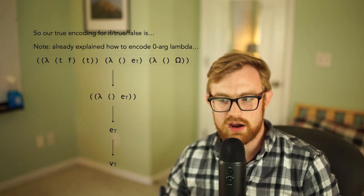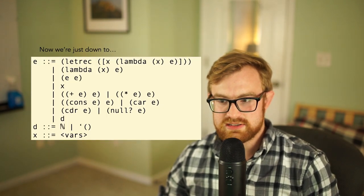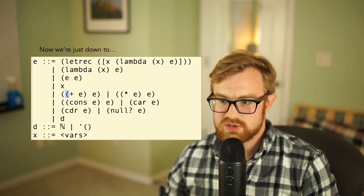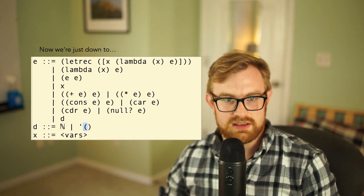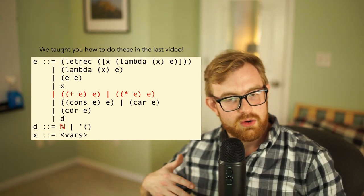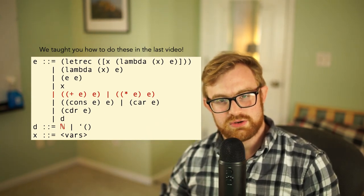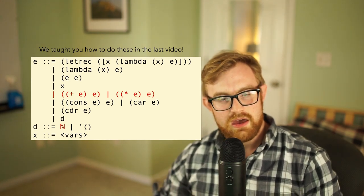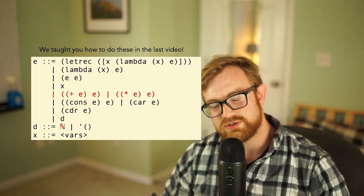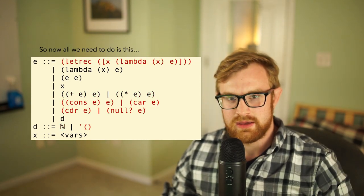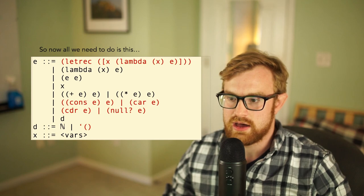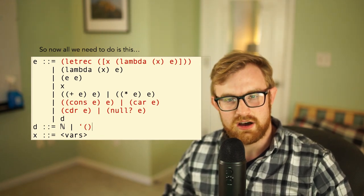All right, so now we're just down to this language where we've removed if and all we have is basically primitive operations over built-in data types, which are going to be natural numbers and lists. So the empty list is the only constructor. Now the key is that we already taught you how to do all the arithmetic stuff. So in the last video we already talked to you about how to do Church encoding for the natural numbers and how to do Church encoding for things like plus and times. And there are some other ones that we're going to include as bonus as well, but you can look them up on the internet if you'd like. We have some instructions in the readme about how to do sub1 and minus and equal and things like that. So the only thing we really need to teach you now how to do is let rec, and then also cons, car, cdr, and null?, and then we need to teach you how to encode the empty list.